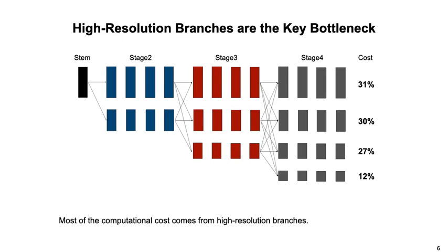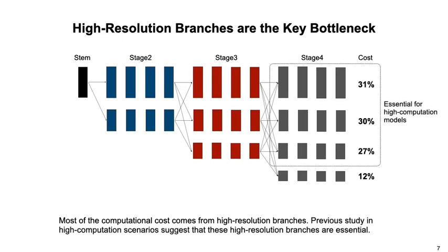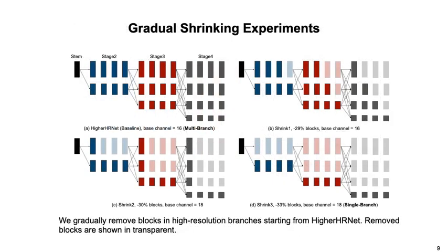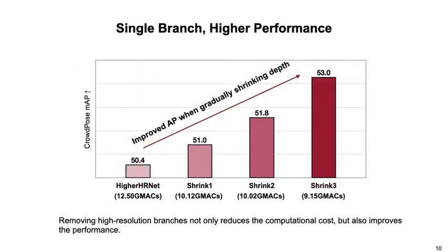One point is that high-resolution branches cost much. Though high-resolution branches have been shown essential in high-computation scenarios, this conclusion may not hold for low-computation models. To verify our idea, we designed the Gradual Shrinking experiment to show the superiority of single-branch architectures. Through gradually reducing the depth of high-resolution branches, the model becomes more single-branch-like. Usually, the computation reduction leads to performance drops. However, the Gradual Shrinking process even provides considerable performance improvement, which reveals the redundancy in high-resolution branches for low-computation models and suggests the single-branch design is a better choice.